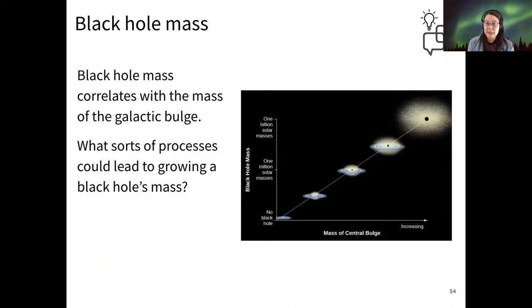When we look at the masses of the black holes that power active galaxies, we notice that the black hole masses correlate with the mass of the central bulge of the galaxy. This image shows both elliptical and spiral together to make the point that these could be elliptical or spiral galaxies. So my question for you in the chat is, what sorts of processes could lead to a black hole's mass growing larger?